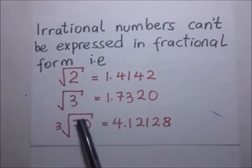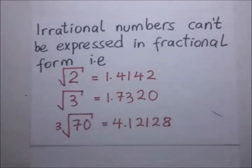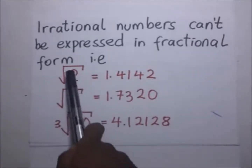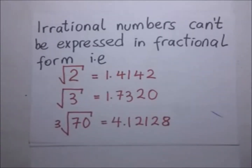Numbers that are left in this form because you cannot easily evaluate them are what we call surds. A surd is any number of the form square root of A or square root of B, where A and B are any integer, which cannot be expressed as a rational number.